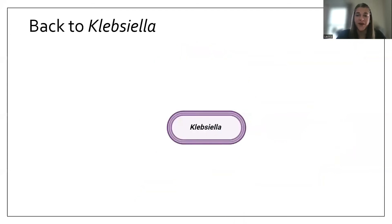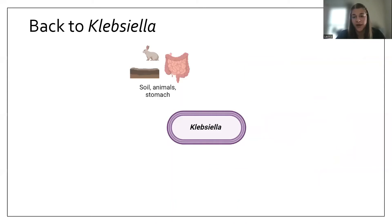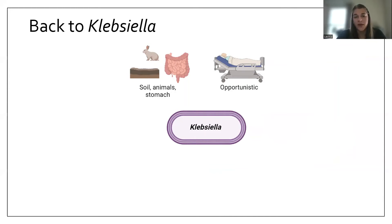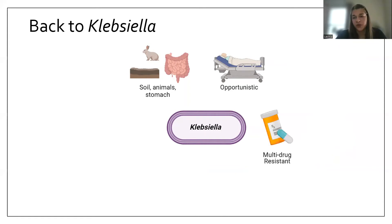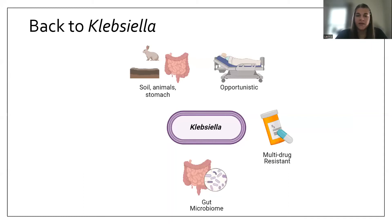Klebsiella is a common bacterium found in the soil, animals, and in our gut microbiome. It is considered opportunistic in that it takes advantage of vulnerable or susceptible populations, such as patients in the hospital who might be really sick or have some kind of immunocompromised illness. One of the reasons Klebsiella is so dangerous is that some types are considered multi-drug resistant, meaning they are able to avoid being killed by the common medications called antibiotics that we use to treat bacteria like Klebsiella.